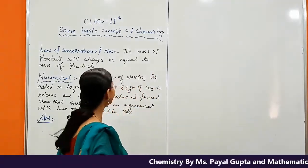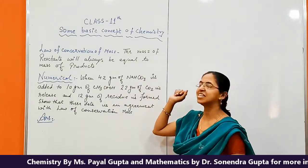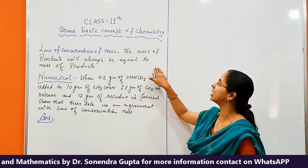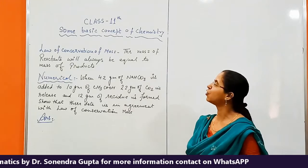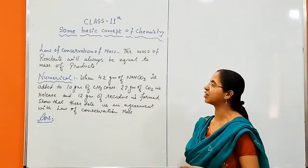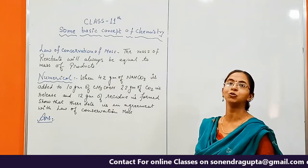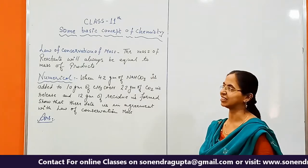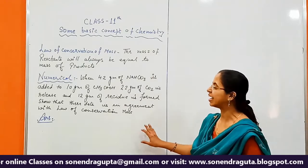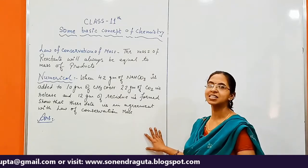The first law of conservation, as we read in the previous lecture, states that the mass of the reactants will always be equal to the mass of the products. On that concept, we have a numerical problem with us.